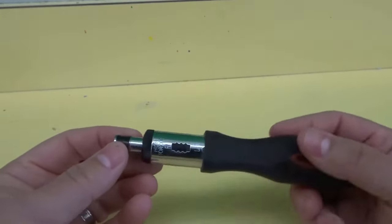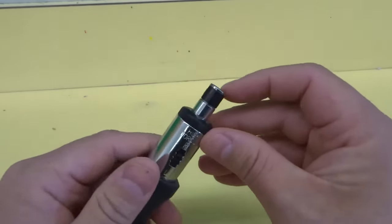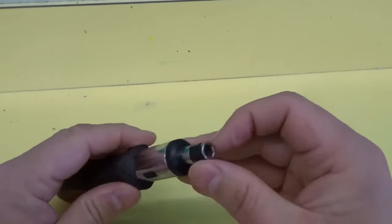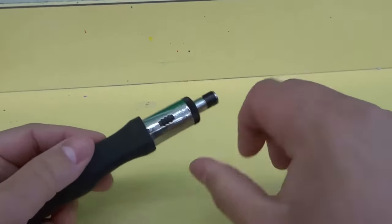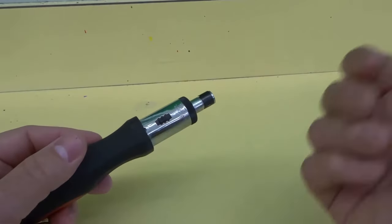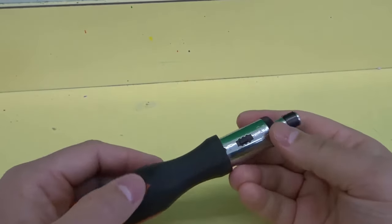This right here is actually a ratcheting screwdriver and it's really useful because it allows you to put a screwdriver bit or a drill bit inside of the chuck here and then you can twist it and it will ratchet for you which makes it very easy to work in tight situations and it's even a little bit easier on your forearm and your wrist than using a regular screwdriver.